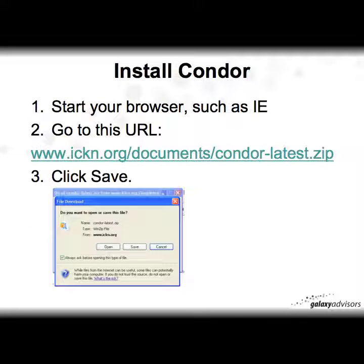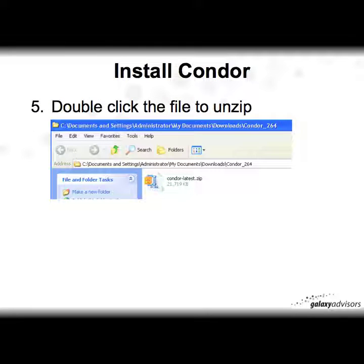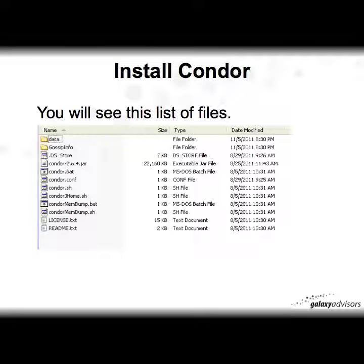Start your browser, go to the URL listed here, and once the page comes up all you have to do is simply click Save. After the download is complete, click the open folder and double-click the file to unzip. You're going to see a listing of files similar to this, along with a few other folders.